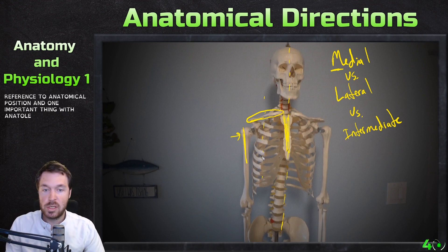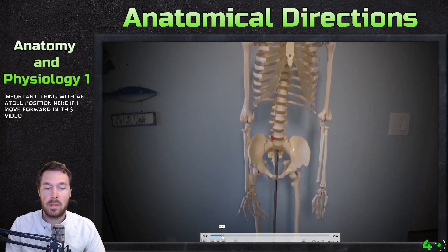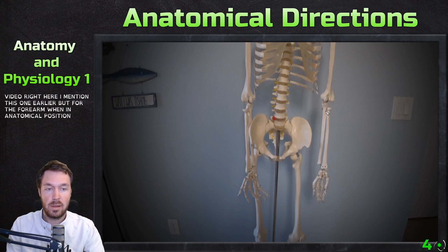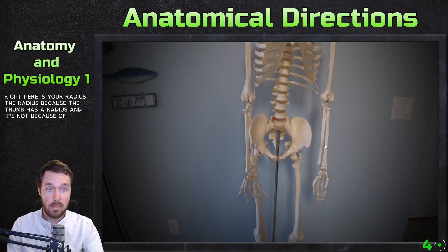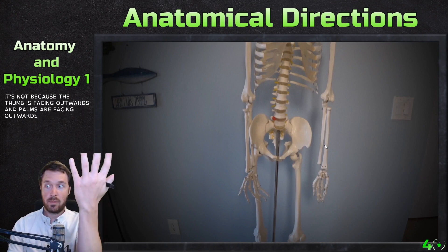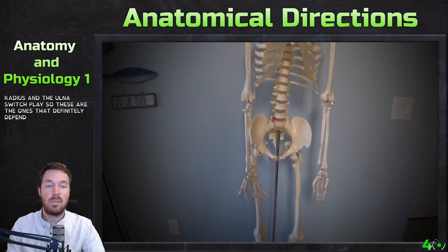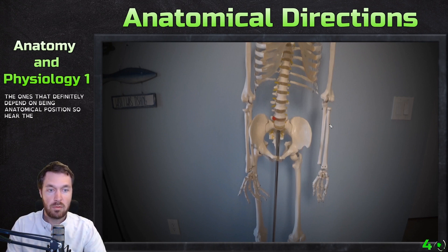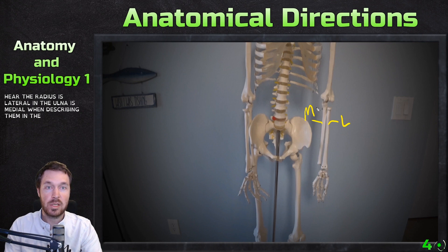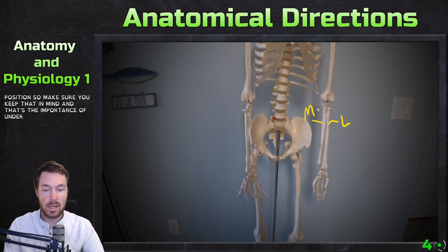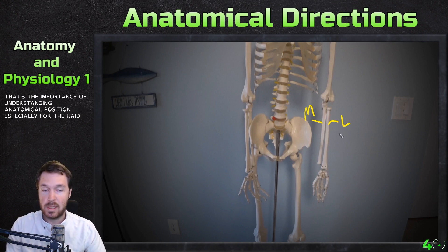One important thing about anatomical position: for the forearm, when in anatomical position, the radius is on the lateral side because the thumb is facing outwards and palms are facing outwards. When you rotate your arm, the radius and ulna switch places. So these definitely depend on being in anatomical position. The radius is lateral and the ulna is medial when describing them in relation to each other in anatomical position. That's the importance of understanding anatomical position, especially for the radius and ulna.